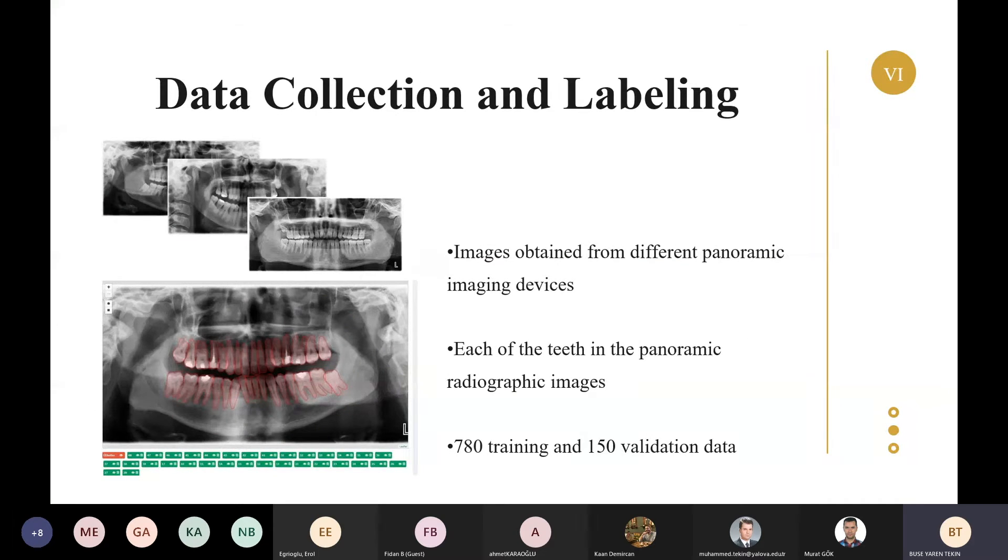Data collection and labeling: images obtained from different panoramic imaging devices were checked by dental radiologists and made ready for use. Each of the teeth in the panoramic radiographic images is labeled and given a class name. Classes are tooth, background, or tooth numbers like 48 or 21. In order to detect objects, a total of 1030 data - 780 training data, 150 validation data, and 100 test data - were labeled in our developed annotation software environment.